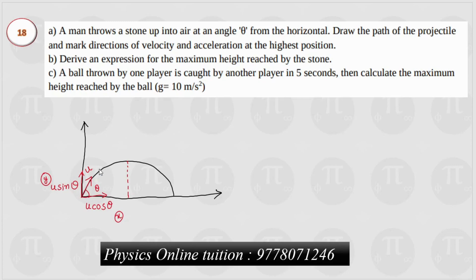At the highest point, the y-component of velocity becomes zero. The speed in the y-direction is 0. If you look at the x-component of velocity, it will be u cos theta. The velocity direction at the highest point is horizontal, in the direction of u cos theta.